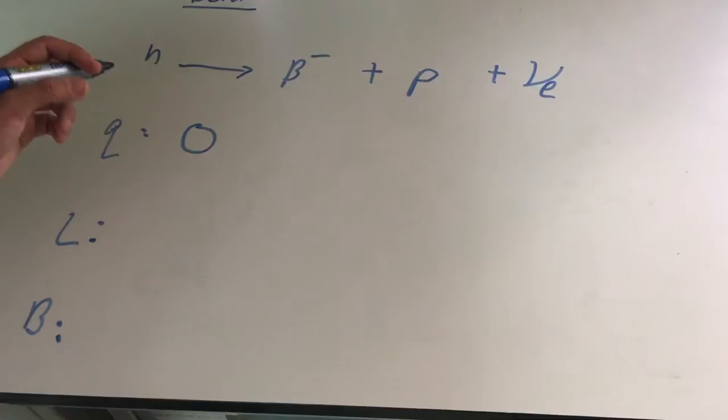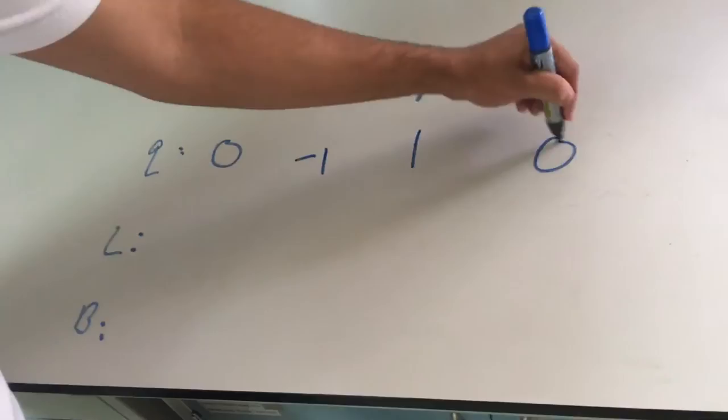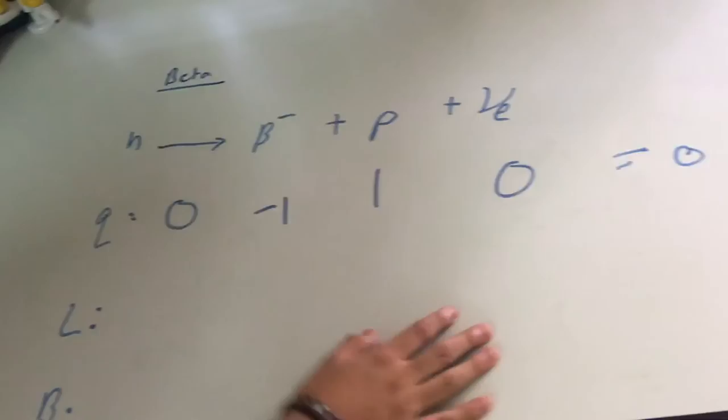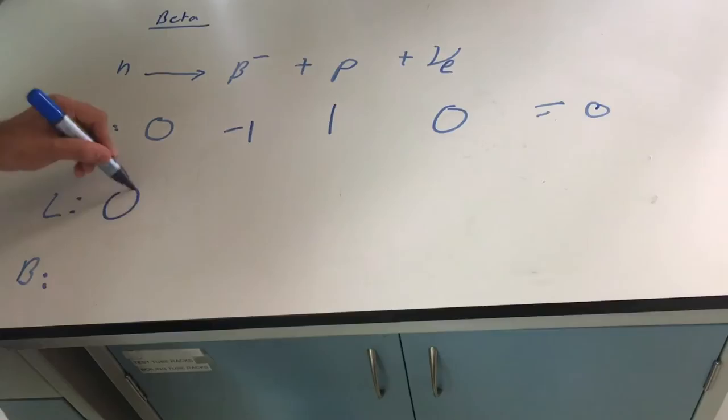The charge of a beta minus particle is minus one. The charge of a proton is plus one. And the charge of a neutrino is zero. Since these two cancel out, the overall charge is equal to zero. Therefore, it is conserved.